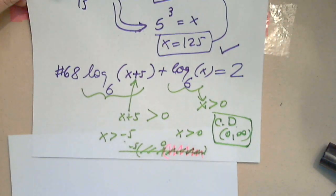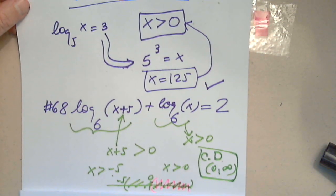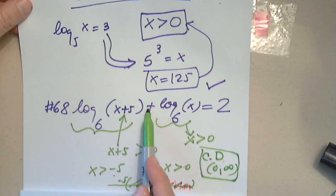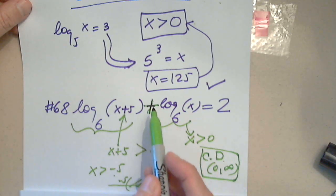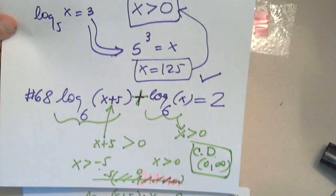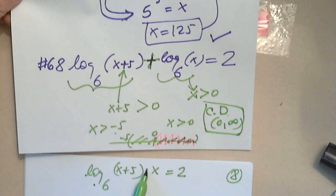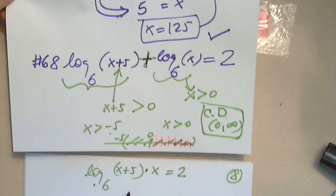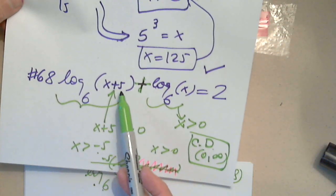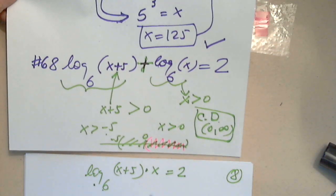And the next step, I will apply what I learned in the previous section. What did I learn? That the sum of two logs is really this. So the sum of two logs is coming from log applied to a product. If I want to go back, log applied to a product is log of x plus 5 plus log base 6 of x.